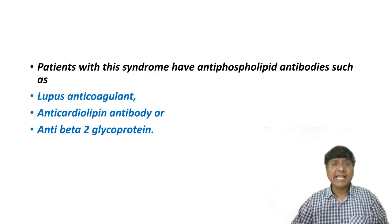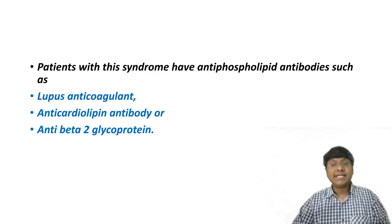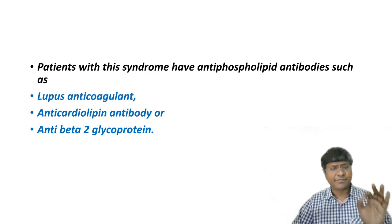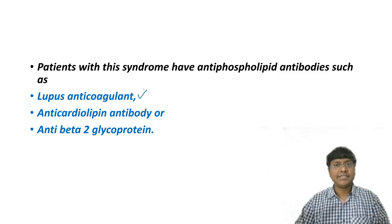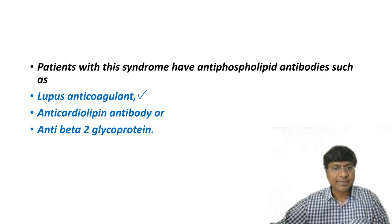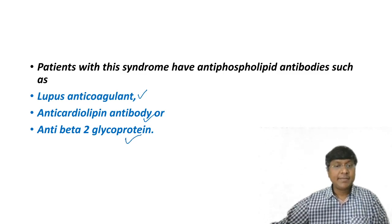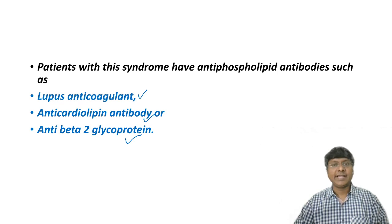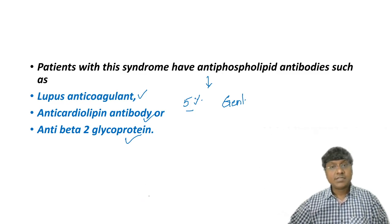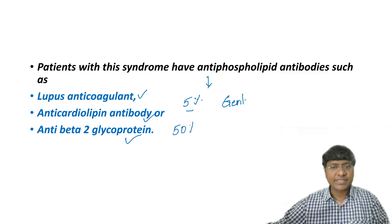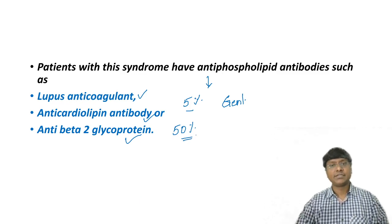What are the antibodies in your APLA syndrome? This is a very important question. In antiphospholipid antibody syndrome the antibodies are lupus anticoagulant, anti-cardiolipin antibody, and anti-beta-2 glycoprotein. The incidence of APLA syndrome in the general population is around 5%, but in patients with SLE it is nearly 50%.